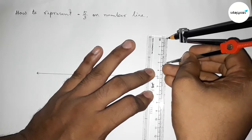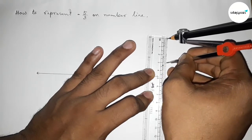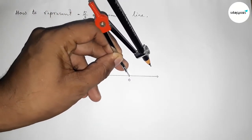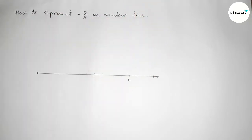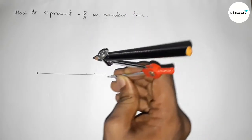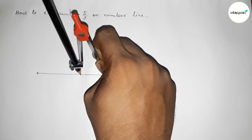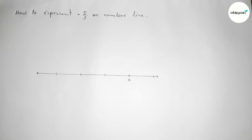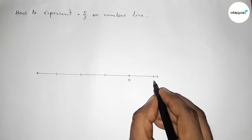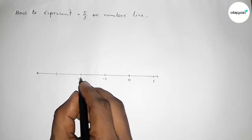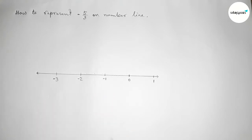You can take two centimeters or any length to first mark the numbers on the line. Putting the compass on point zero and cutting here, then again with the same length putting the compass on point zero and cutting the other side. By this way we construct the number line: this side will be one, two, and so on; this side minus one, minus two, minus three, and so on.